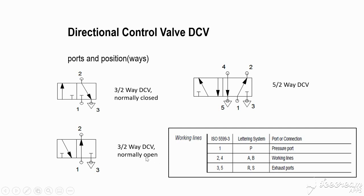A normally open valve is also available. In normally open condition, air flows from port 1 to port 2, and port 3 (exhaust) is closed. When you press the valve, port 1 is locked and air passes from port 2 to port 3 and exhausts.